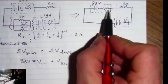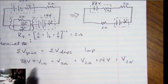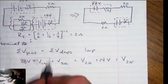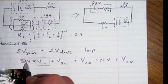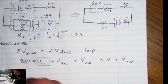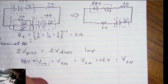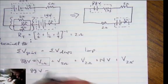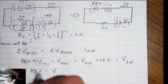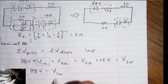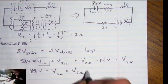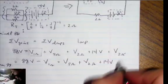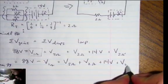And now I would like to find the terminal, so in order to do that I am going to realize that this is an internal drop right here for this 88 volt battery. So my V terminal then for the 88 is going to equal 88 volts minus that voltage inside V 1 ohm. That's going to equal V through the 5 ohm plus V through the 2 ohm and 14 volts plus V through the 2 ohm prime.